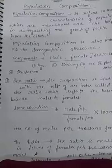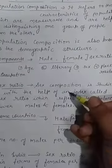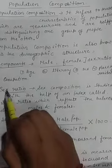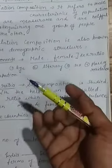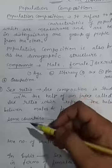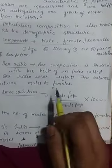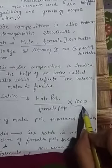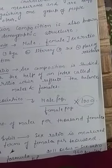Sex composition gives us the data — the index — showing whether the population of males and females in an area is balanced. It is the ratio between the number of women and men in the population. In some countries, it is represented as the number of males per thousand females. In some areas it is also represented per hundred: female population divided by male population multiplied by hundred.